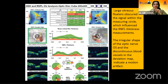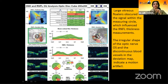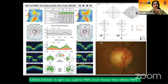Large vitreous floaters in the left eye — these two vitreous floaters are obscuring the signal within the measuring circle and influencing the RNFL thickness. Also note the irregular shape of the optic nerve in the left eye, which is not present in the right eye, along with a segmentation error — the blood vessels are discontinuous, which indicates a motion artifact where the patient has moved his or her eye.